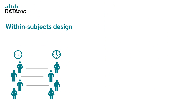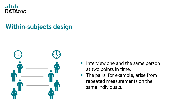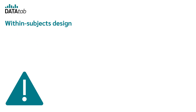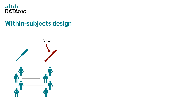You have a within-subjects design if you interview one and the same person at two time points — once before and once after a certain event. The pairs arise from repeated measurements on the same individuals. There does not necessarily have to be a before-after relationship. For example, a within-subject design also exists if you want to test whether a new type of baseball bat has an effect on game results, and you let the same people play once with the old bat and once with the new one. The measured values are available in pairs, and each player has two measured values.